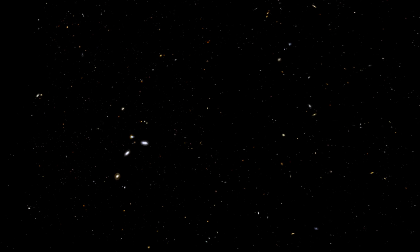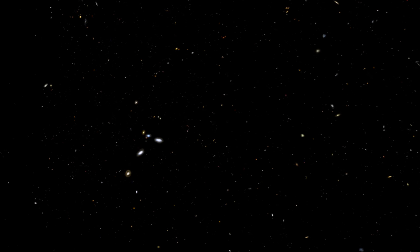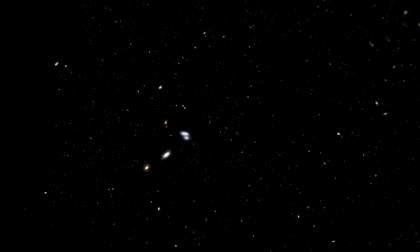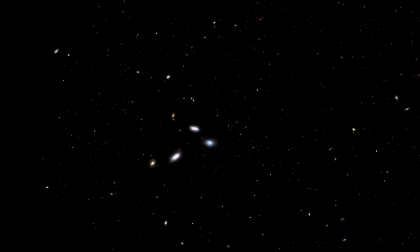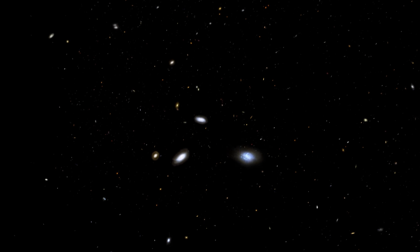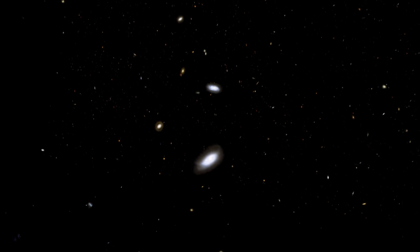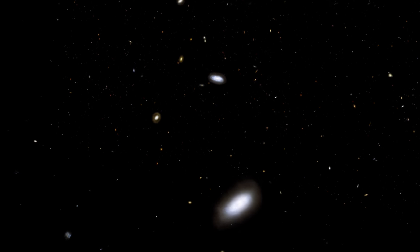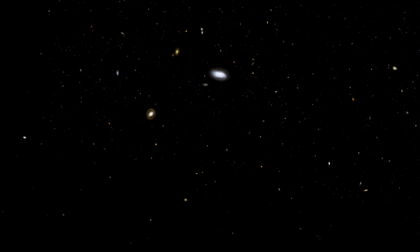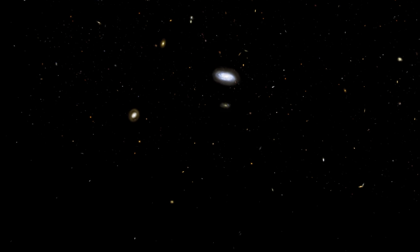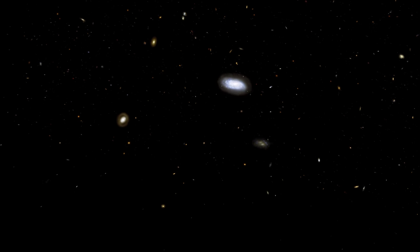When we look out into the universe far enough, we see, on average, the same distribution of galaxies in all directions. In other words, there is no preferred direction in space — it's isotropic.